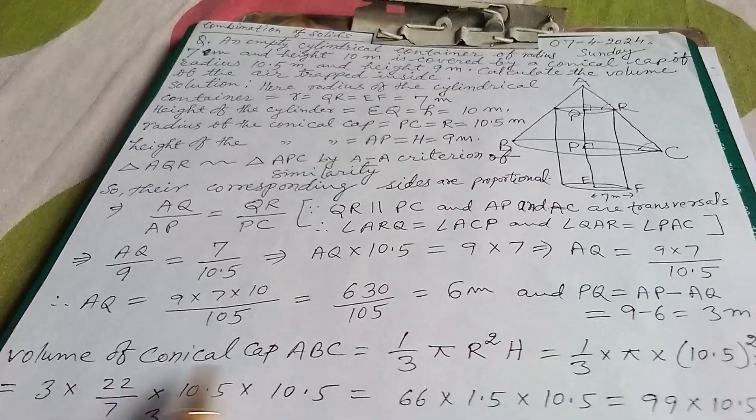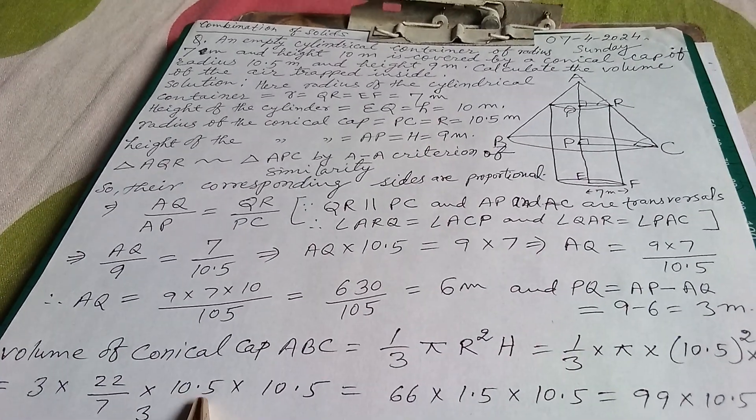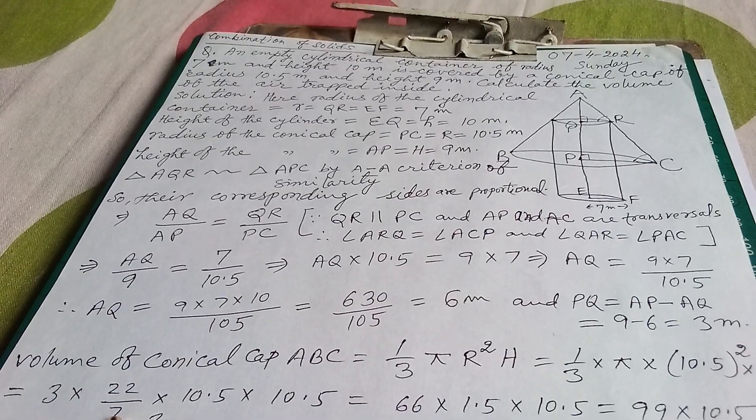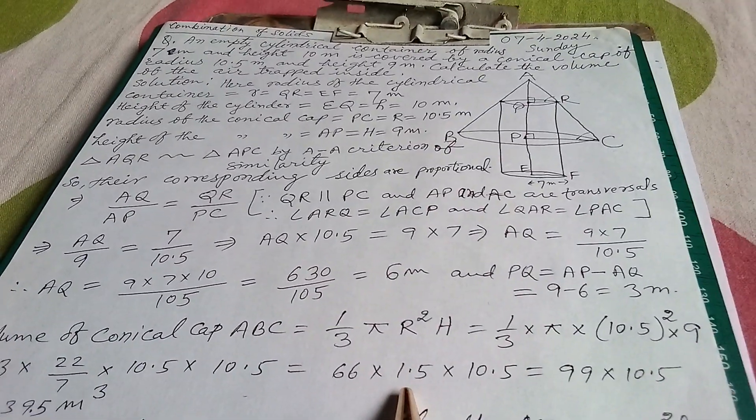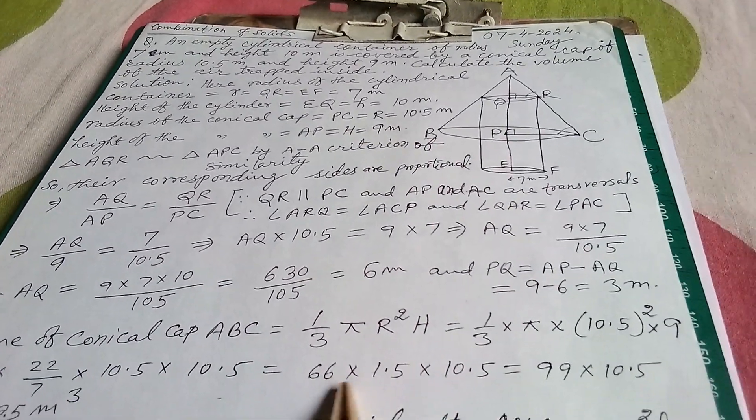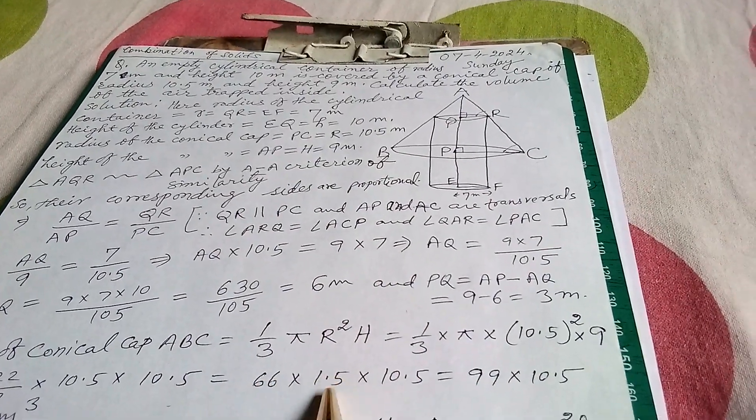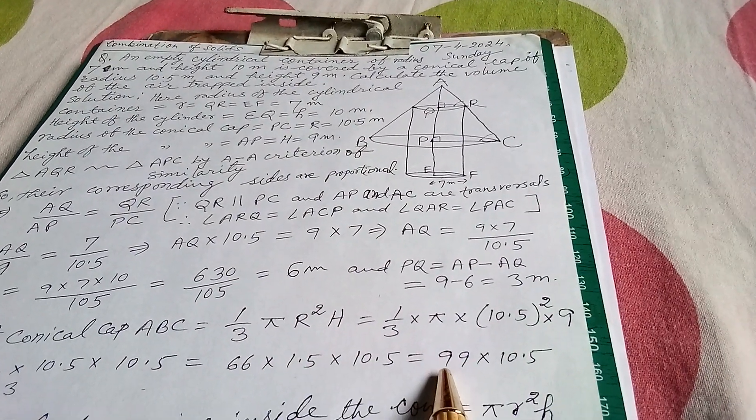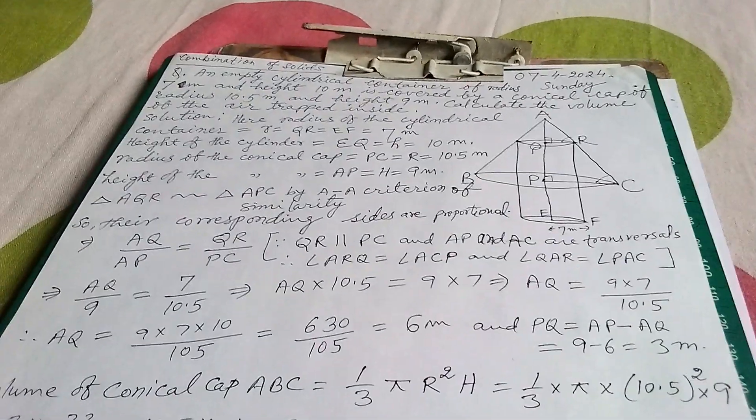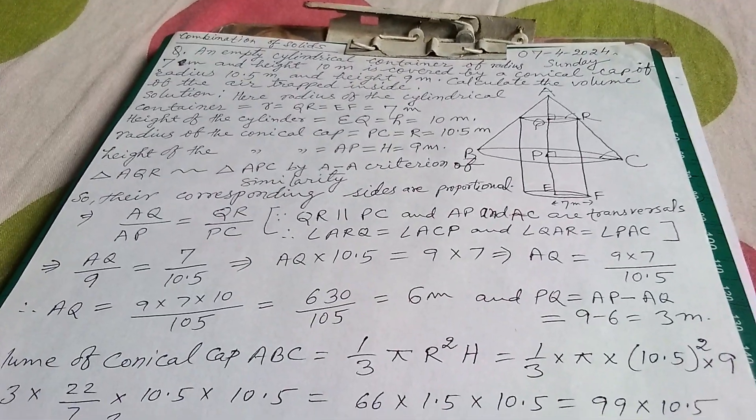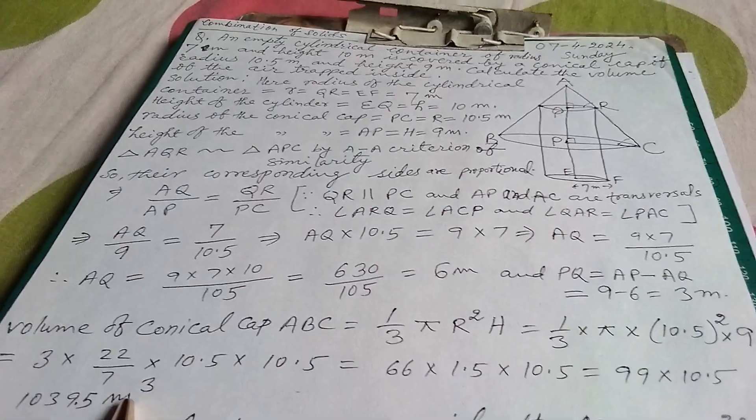3 times 22 is 66, and 10.5 is cancelled by 7, then we get 1.5 here. So 66 times 1.5 times 10.5. Now 66 times 1.5 is 99 times 10.5, and these both we multiply and we get 1039.5 meter cubed.